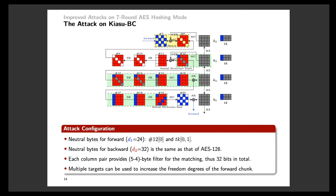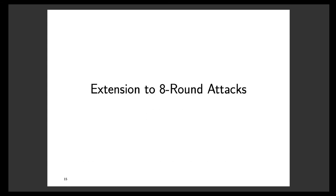Notice that the freedom degrees for the forward computation are less than those of the backward and also the filtering speed for the match. So to improve the attack, multiple targets can be introduced to increase the freedom degrees of the forward chunk. In the following, I will show that neutral bytes from the key state can be used to extend both attacks to 8 rounds for the first time.